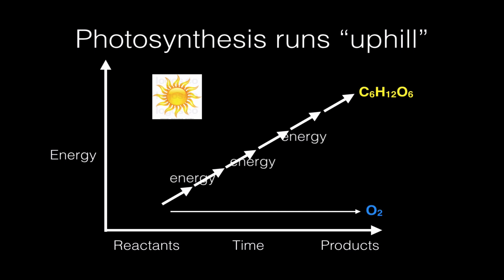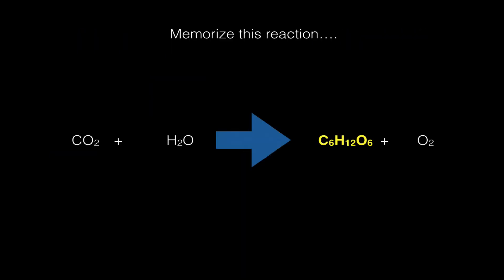So I'm hoping this graph shows you the uphill nature of photosynthesis, where you're taking two reactants, carbon dioxide and water, and you're combining them in an uphill chemical process that produces glucose.